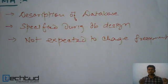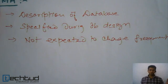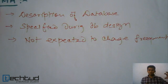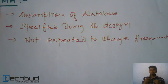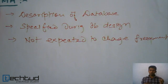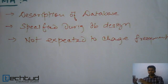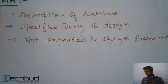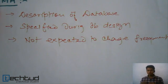You have some constraints — for example, you have a department table which is offering courses to students. A student opting for a course should be offered by that department. So if you are inserting a record in the database, the course the student is choosing should be available in the record table. These kinds of constraints we impose on the database system, and this is called schema.